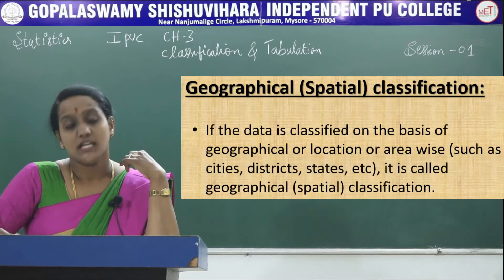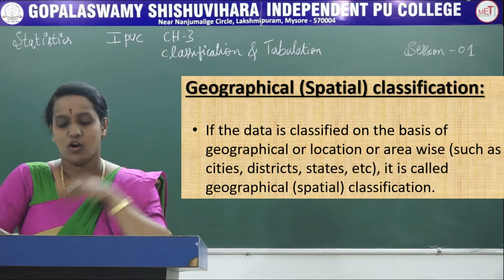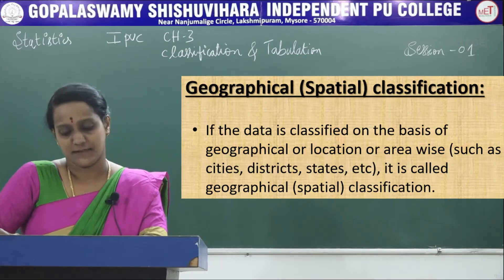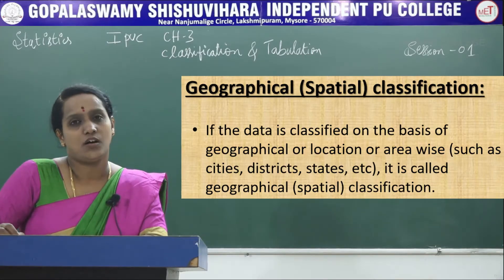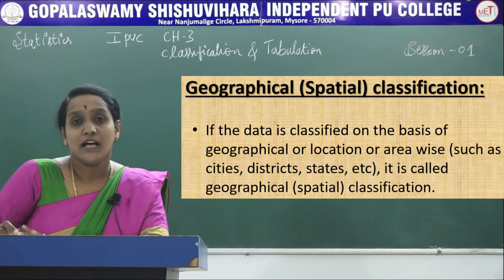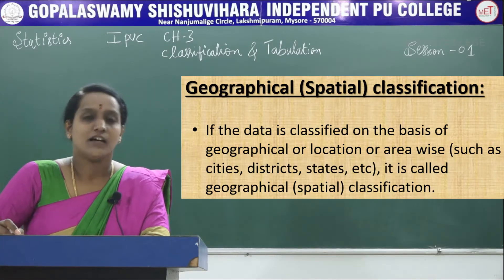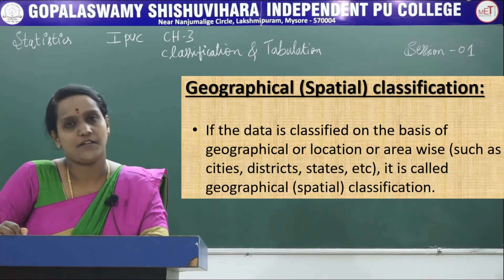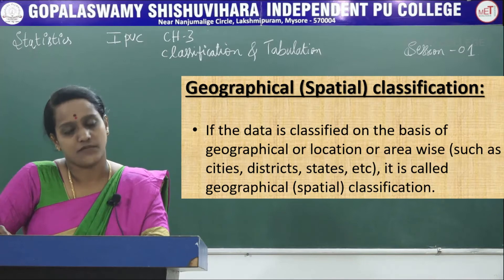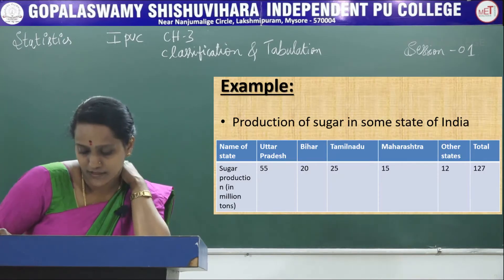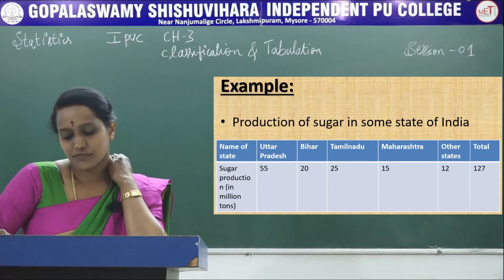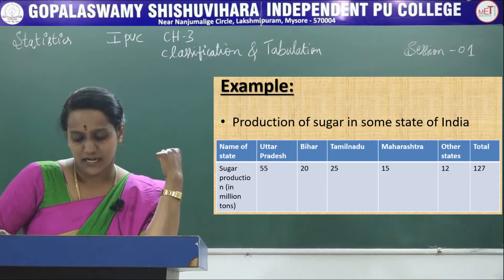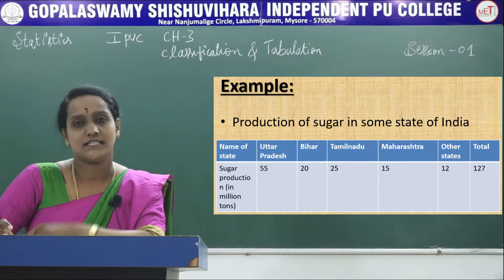Next is geographical classification. If data is classified on the basis of geographical location or area — such as cities, districts, states, countries, etc. — it is called geographical classification. Based on areas and localities, if we divide the data, we call it geographical classification. An example is the production of sugar in various states in India, where the name of each state and its sugar production are given.